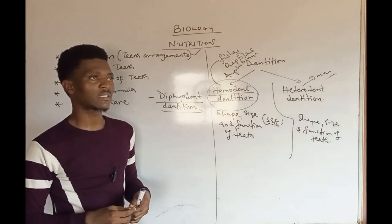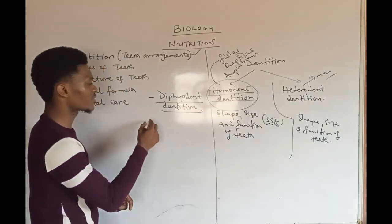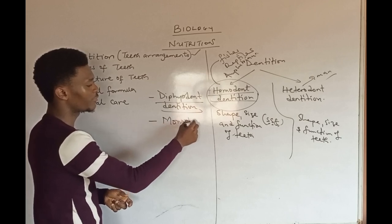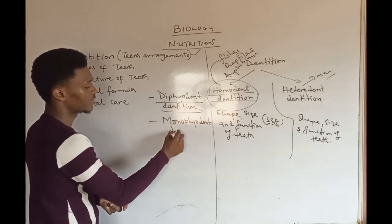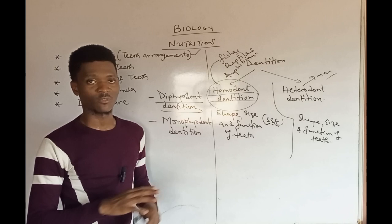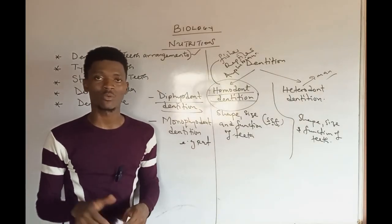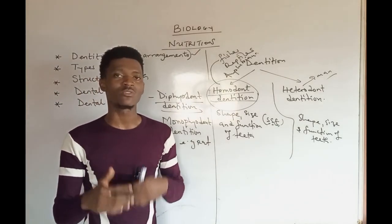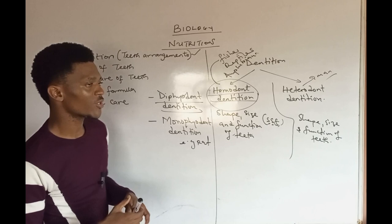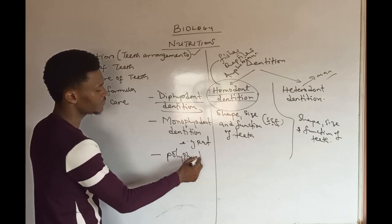Some other vertebrates only have just a single set of teeth throughout their lifespan, and such organisms exhibit monophyodont dentition. A classical example of an organism with just one set of teeth throughout its lifespan is rats. We also have some vertebrates that continuously shed off or discard their teeth and get them replaced — they exhibit polyphyodont dentition.